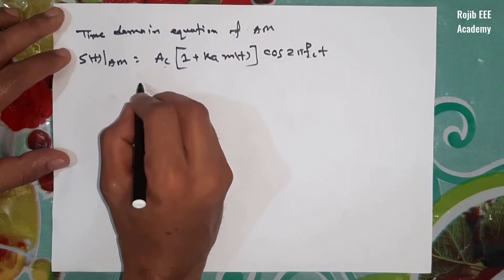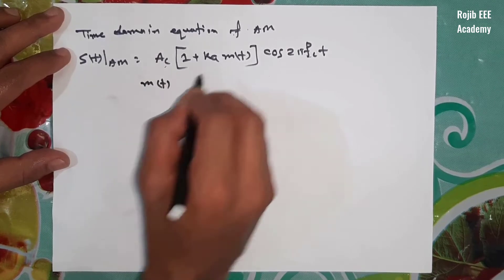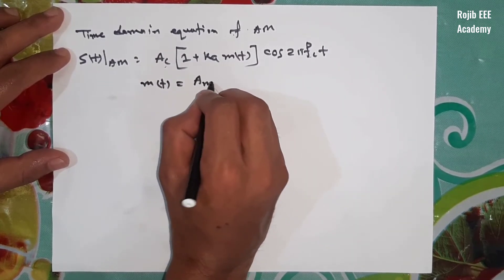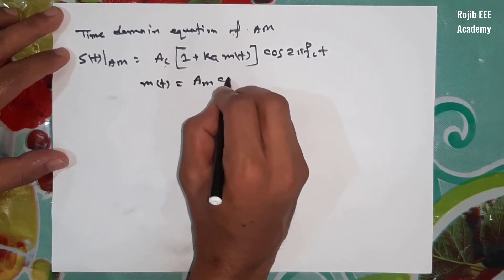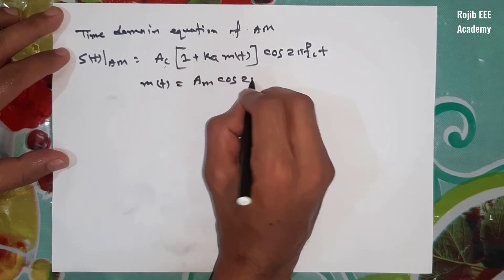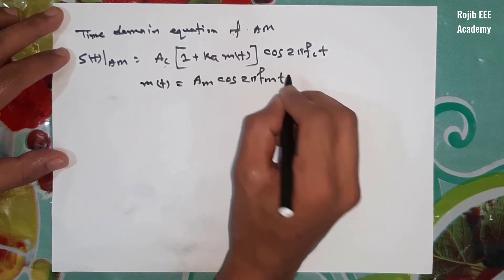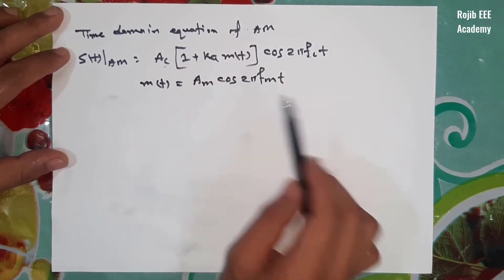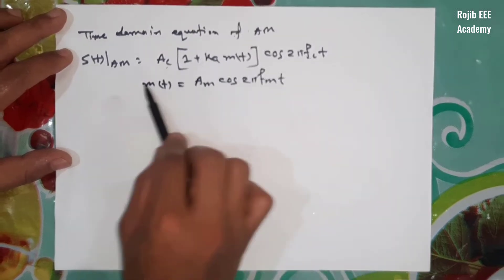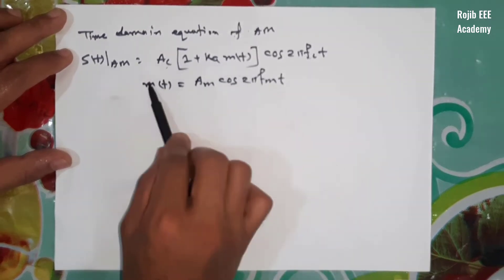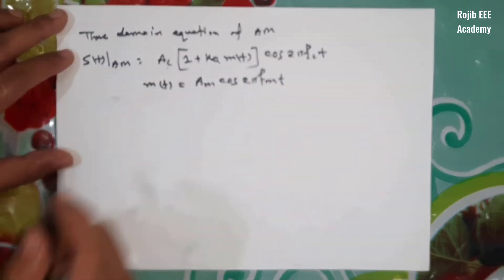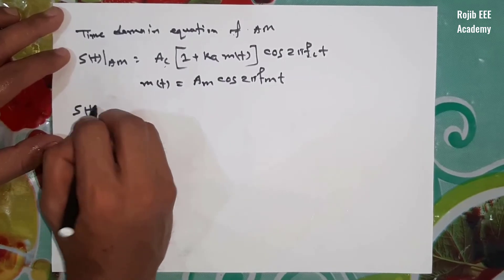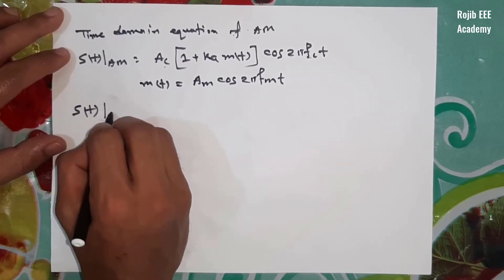We are looking at AM. The expression involves c·2π·fm. There are two types and we are getting to the AM formulation using the first method.